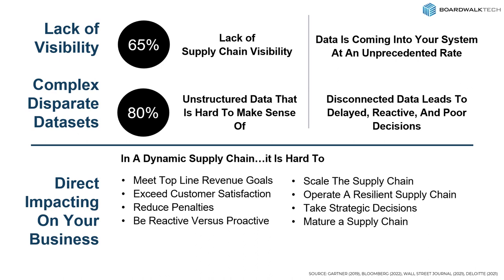This is a big problem in the marketplace. If you look at the research across Gartner, Bloomberg, and others that do these types of surveys, 65% of companies say they have a lack of supply chain visibility, and it gets even worse as you go out to your second and third tier suppliers. We think this problem is not getting any easier.